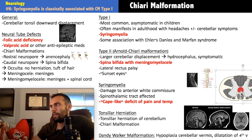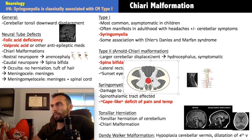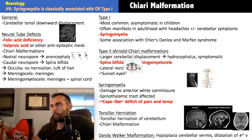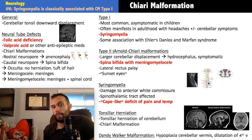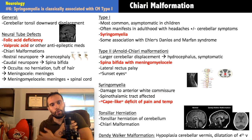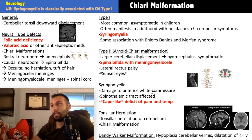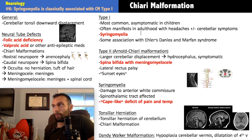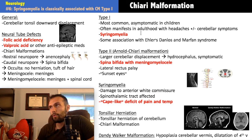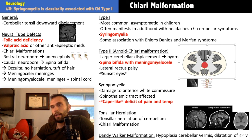In syringomyelia, the cavitation sits right in the middle where the anterior white commissure crossing occurs, knocking out the spinothalamic tract — pain and temperature sensation. This almost always affects the cervical region, producing loss of pain and temperature in a cape-like distribution across the shoulders and arms. Proprioception and vibration (dorsal columns) are usually preserved. The classic board question is a young adult, typically male, late 20s to early 40s, presenting with this cape-like sensory deficit.